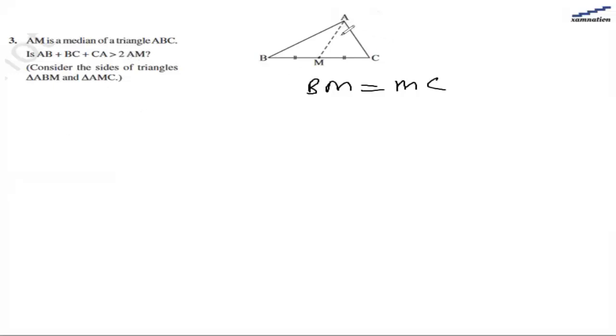If we join the line AM, we have two triangles forming. The first triangle is ABM and the second triangle is AMC. We are going to use the triangle property.